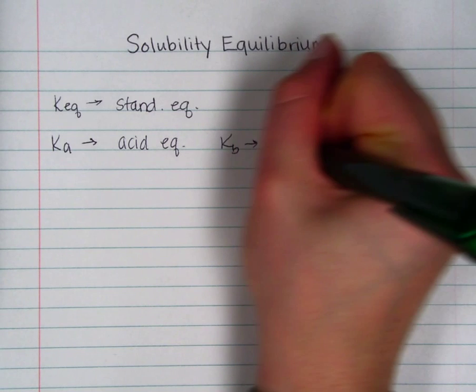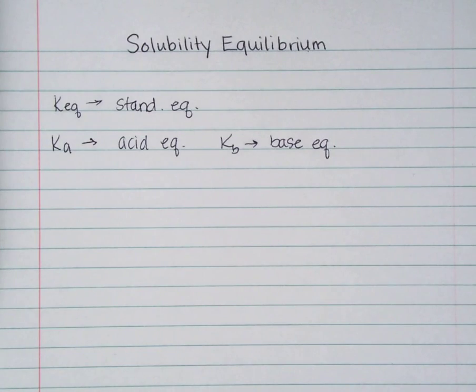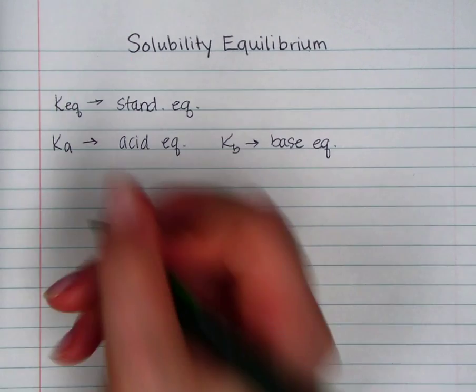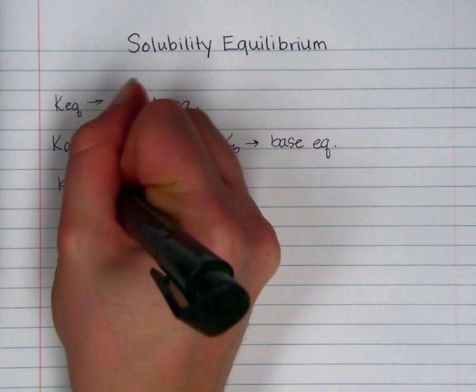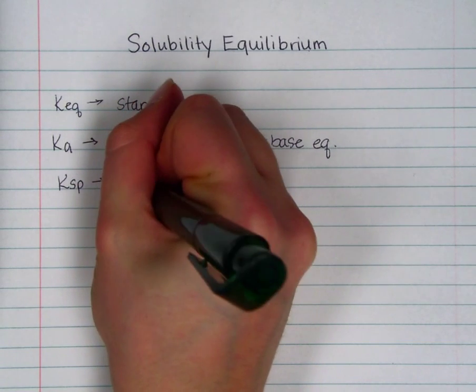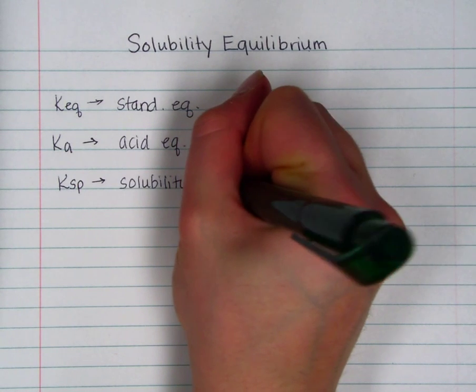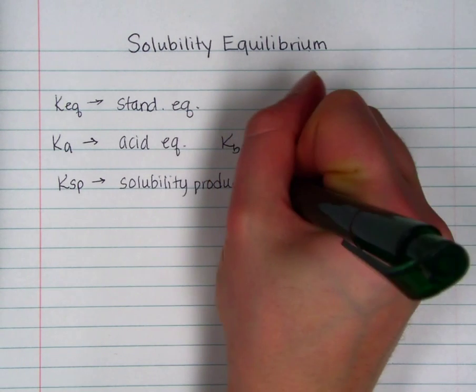So KB would be a base equilibrium constant, and again for weak bases. KSP stands for the equilibrium constant, it's called a solubility product constant.